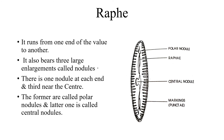The cleft-like structure in the center of the valve face is called the raphe. It runs from one end of the valve to the other and bears three large enlargements — one at each pole, called polar nodules, and one in the center, called the central nodule.